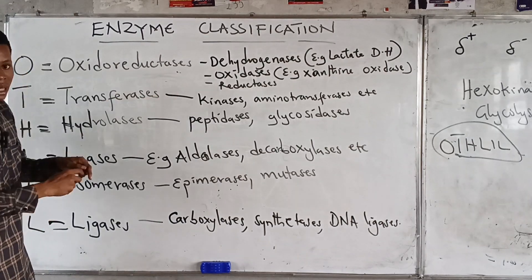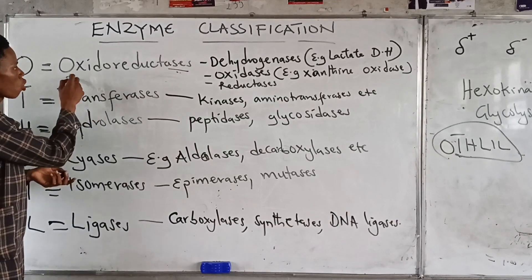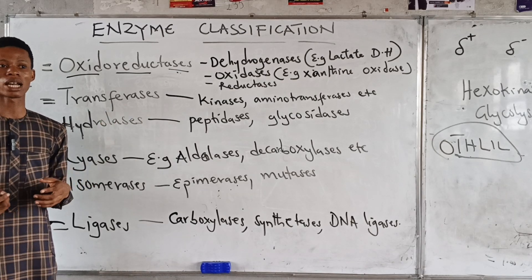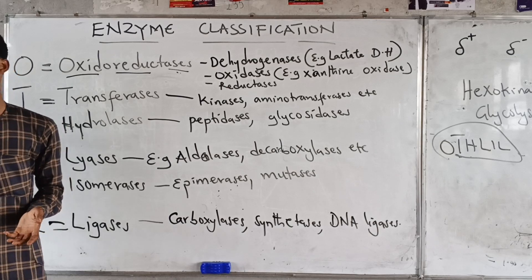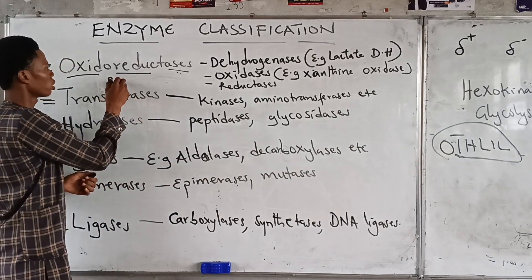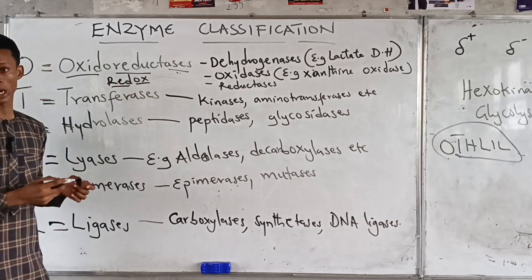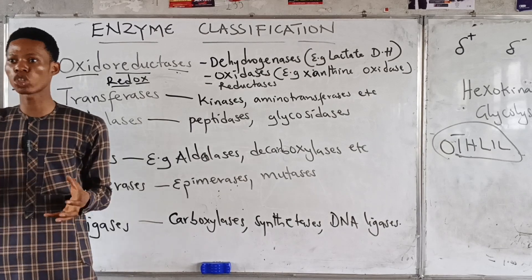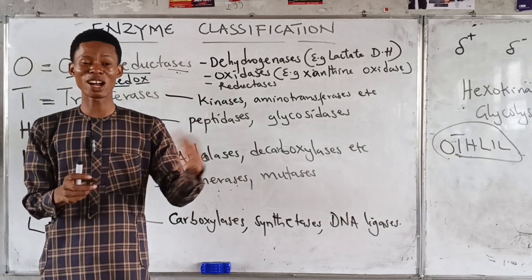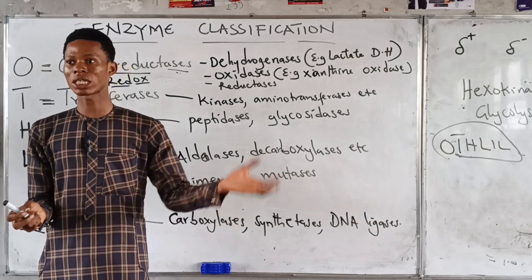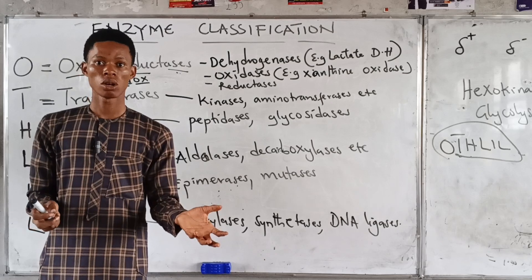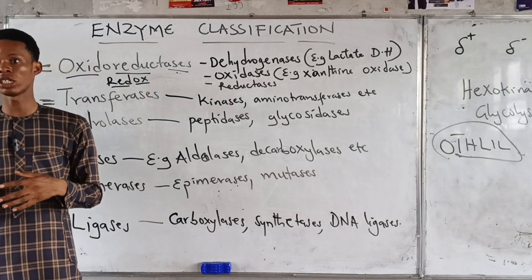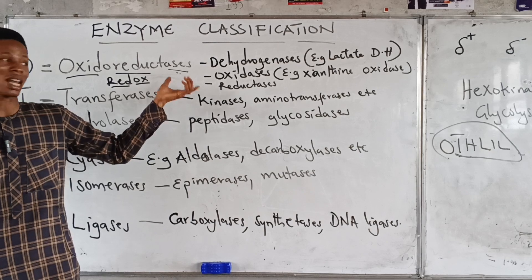Oxidoreductases are enzymes that catalyze oxidation-reduction reactions — redox reactions. Oxidation is the addition of oxygen and removal of hydrogen, while reduction is the addition of hydrogen and removal of oxygen. So enzymes that can add or remove oxygen or hydrogen are called oxidoreductases.